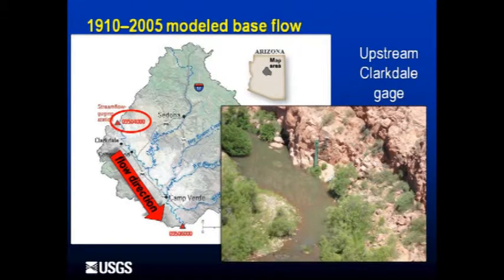And most notably, moving through the Verde Valley — to my mind notably — is the Verde River, moving from the middle left to the bottom middle here, as you see the red flow direction arrow. It enters the Verde Valley at the area denoted by this red triangle — that is where the water enters the Verde Valley. It's already a perennial, year-round stream at that point. It flows through the Verde Valley, picks up additional base flow and flow from Oak Creek, Beaver Creek, West Clear Creek.